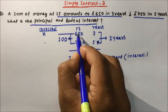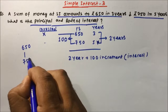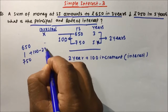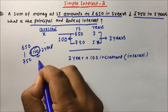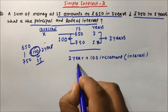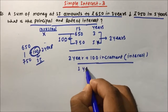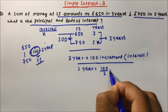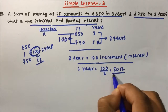Your amount is increasing — it was 650 and became 750 — so 100 rupees increment is there in 2 years. This 100 rupees increment is nothing but the simple interest. So in 2 years, 100 rupees interest; therefore in 1 year, 50 rupees will be the interest.